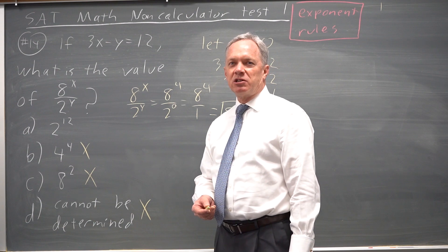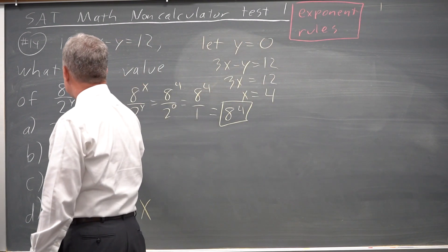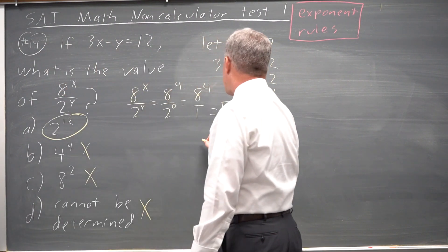So none of the above or cannot be determined is very rarely correct. So I'm guessing it's 2 to the 12, and let's take a look at that.